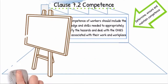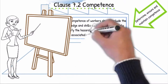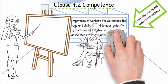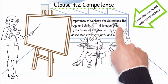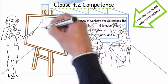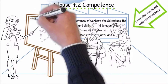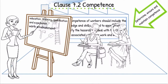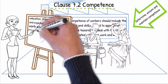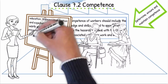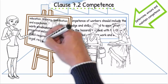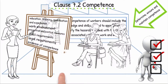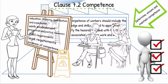This includes ensuring that workers have the ability to identify hazards on the basis of appropriate education, training or experience; to evaluate the effectiveness of the actions taken in their work environment to prevent and control measures resulting from the risk assessment process according to the applicable OHS legal and other requirements; and to retain appropriate documented information as evidence of competence.